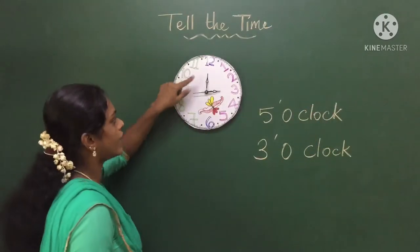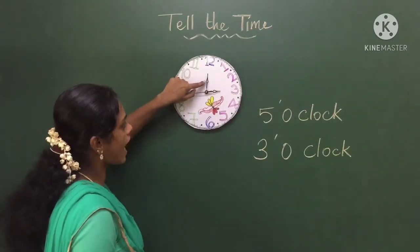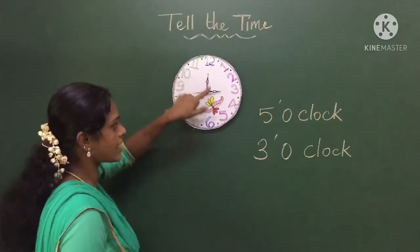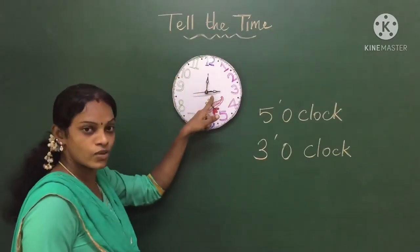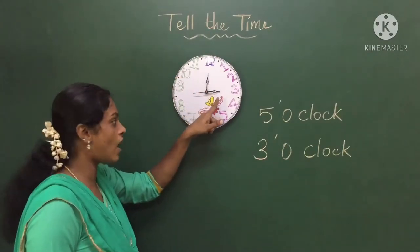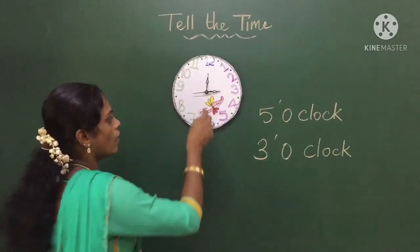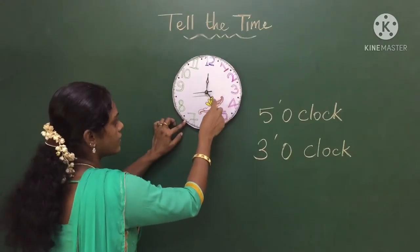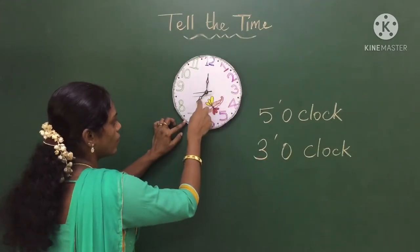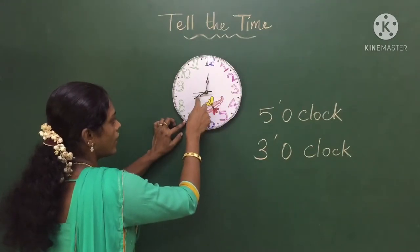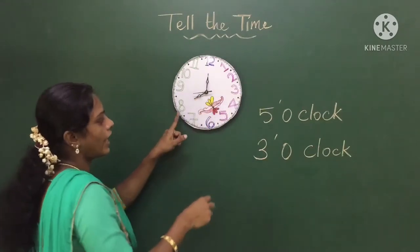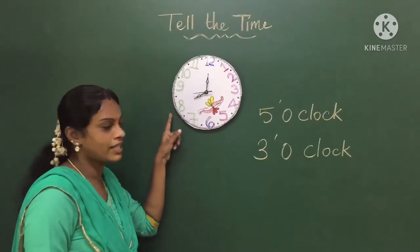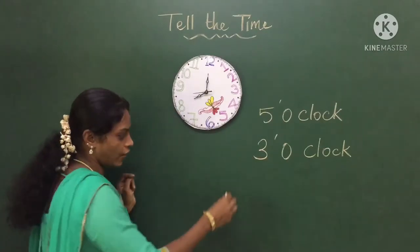Once again I am going to explain — this hand shows the minute, and this hand shows the hour. Now once again, if the small hand moves to number eight, what is the time? It is eight o'clock.